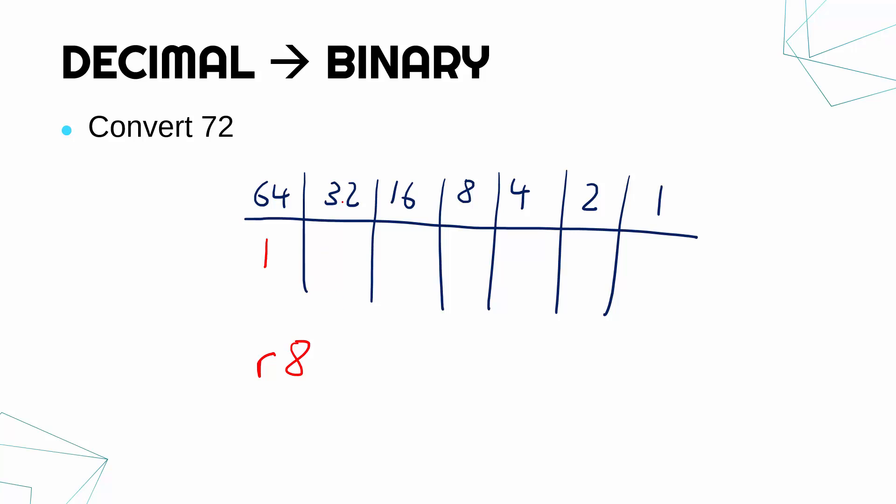Now, 32, does it go into eight? No, it doesn't, it's too big. So I put down a zero, and my remainder stays the same. So don't change it if you put down a zero. 16 doesn't go into eight, I put down a zero. But eight does go into eight. I put down a one, and I've got remainder zero.